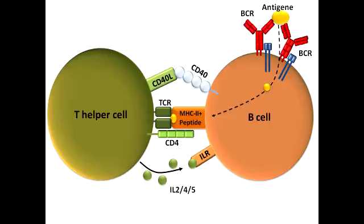What lab findings are seen with Hyper-IgM Syndrome? In Hyper-IgM Syndrome, as the name suggests, there is going to be an increase in the level of IgM, but there is going to be a decrease in immunoglobulin G, immunoglobulin A, and immunoglobulin E. Basically, what ends up happening is that B-cells will keep making IgM antibodies because they can't class switch, and therefore cannot make any other antibodies — so there is an overproduction of IgM but an underproduction of all the other antibodies.